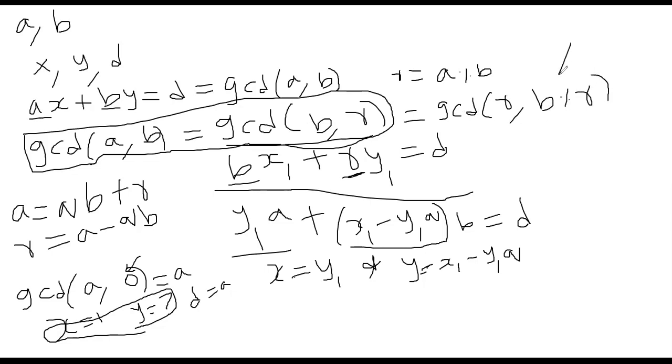At that time, we know the value of X and Y and then we use that to build the next level of X and Y. That's why I said here if you magically solve the sub problem of B and R, we get the X1 and Y1. And then we just take X to be Y1 and Y to be X1 minus Y1 times Q. That's basically it.